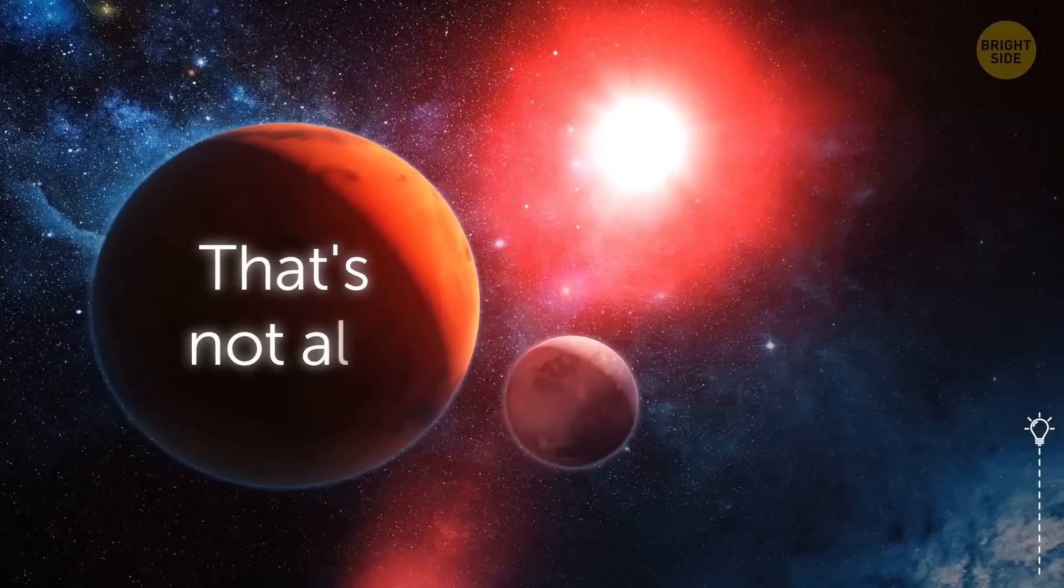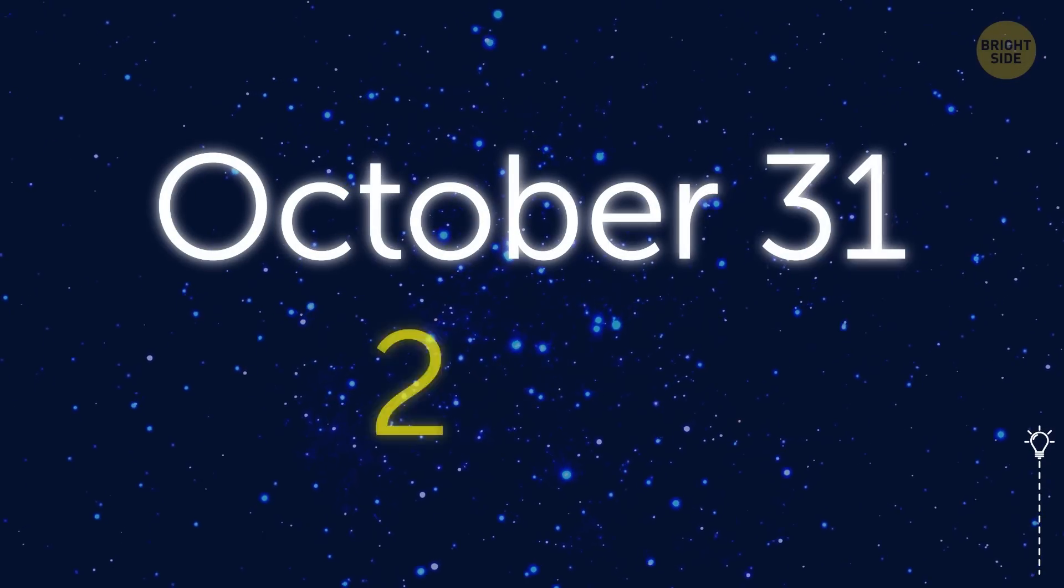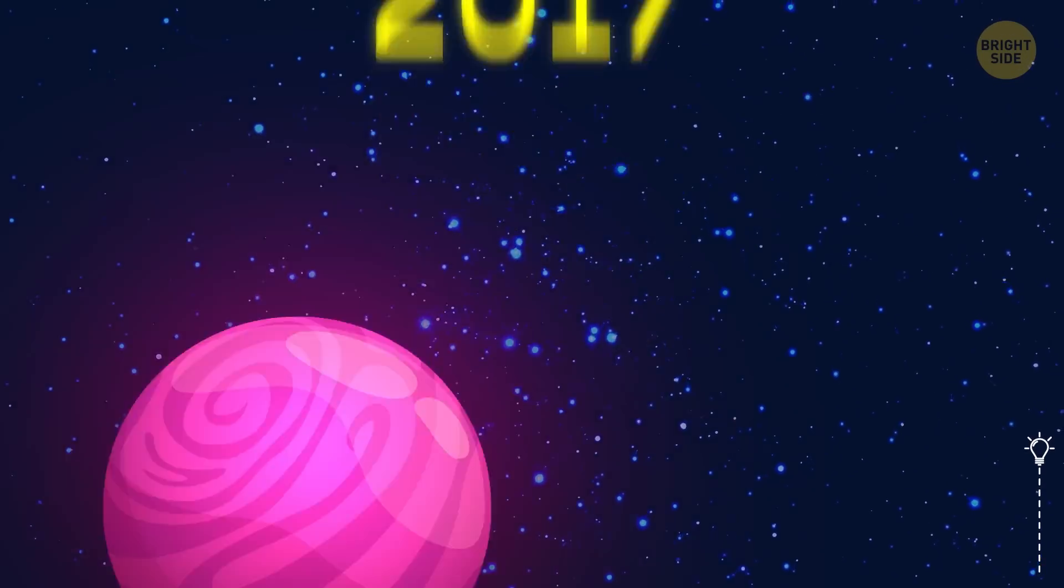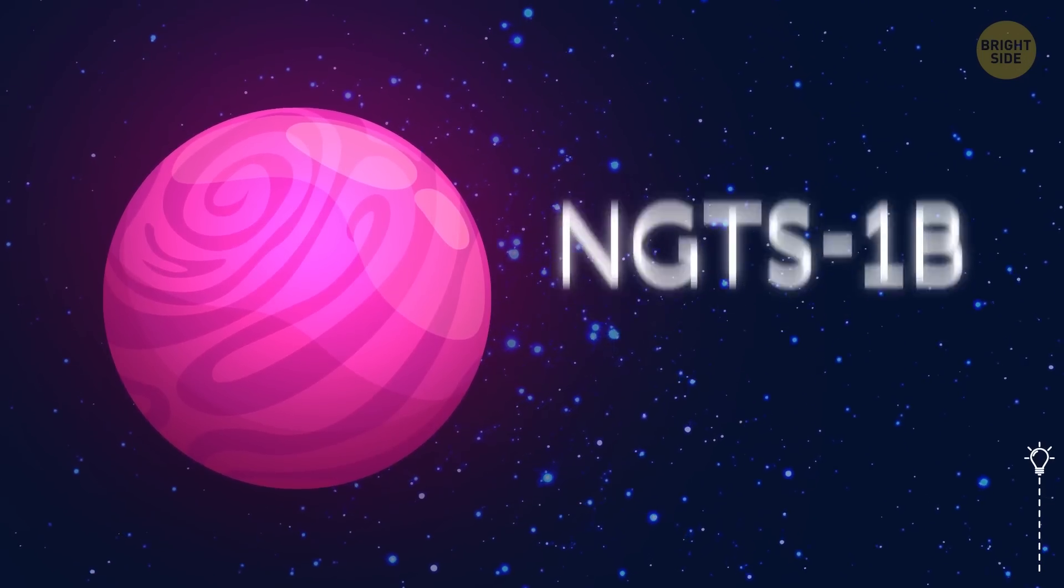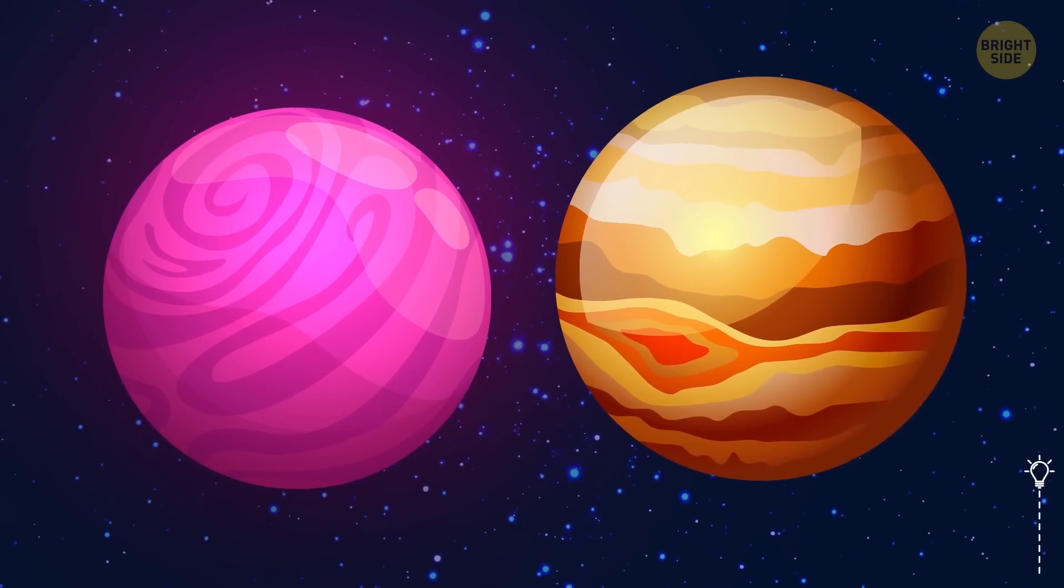And this isn't the first surprising discovery of NGTS. On October 31, 2017, the NGTS-1b planet was discovered. This planet is a hot gas giant, almost exactly the same size as our neighbor Jupiter.